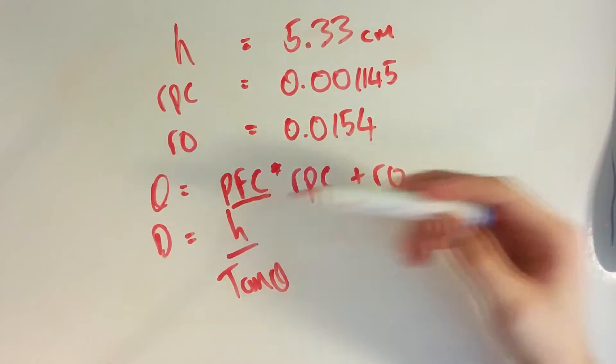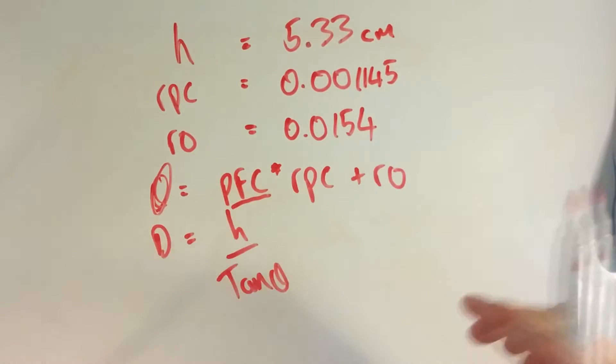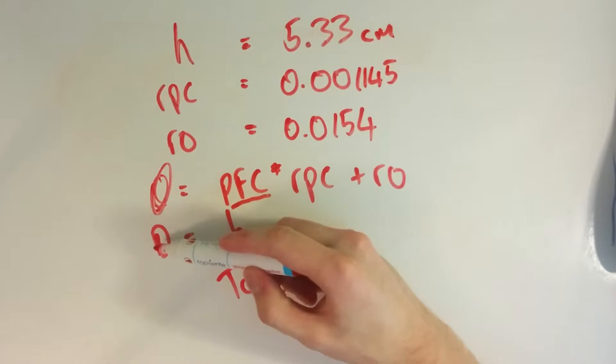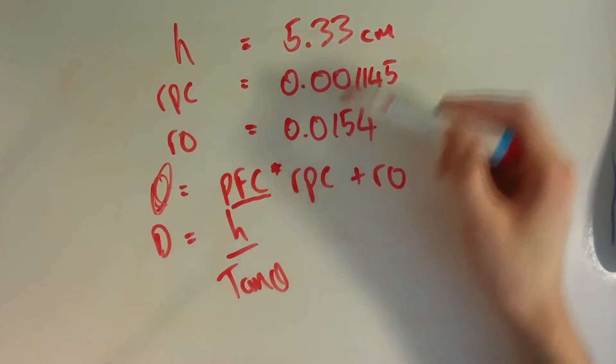So then we can work out theta right from the computer program looking at the laser dot. Then to get the distance that the object is actually at, you just plug in your h.